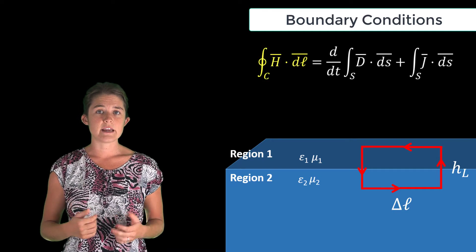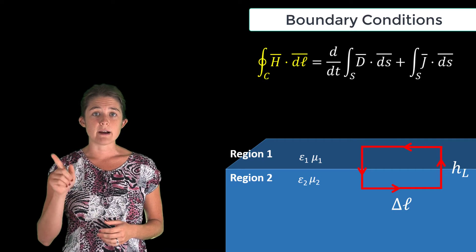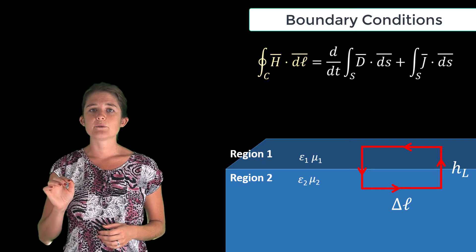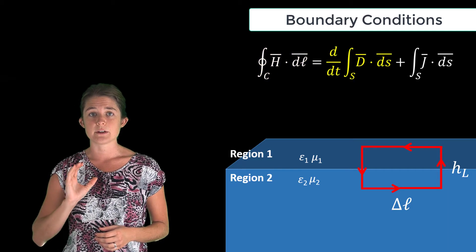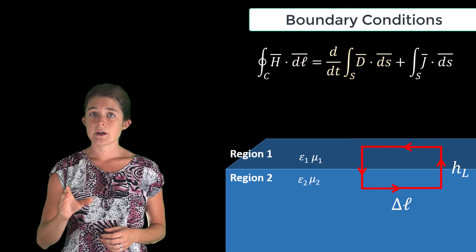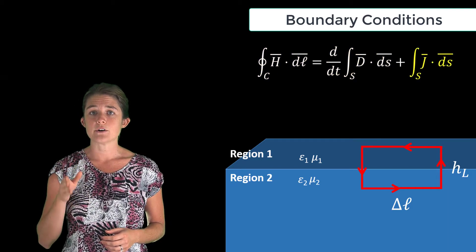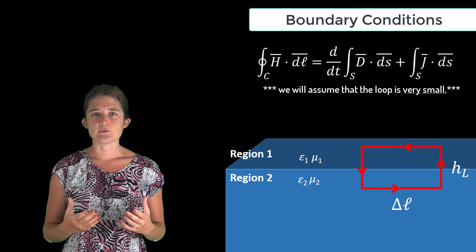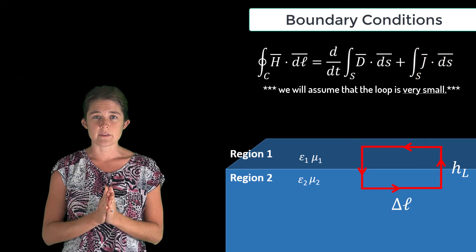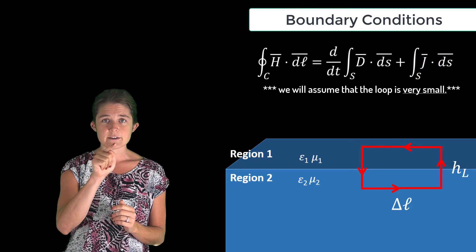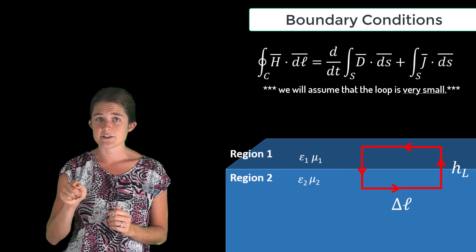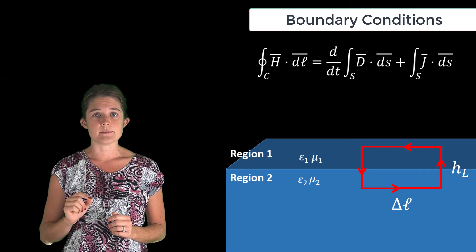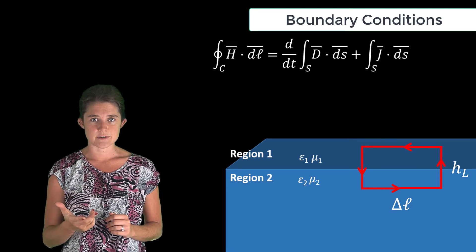Ampere's law says that if we integrate H dot dl around this loop, it has to equal the time derivative of the electric field through the loop plus the current through the loop. We're going to assume that the loop is so small that the fields are approximately constant along each of its edges, and go around the loop one edge at a time to make the integration.